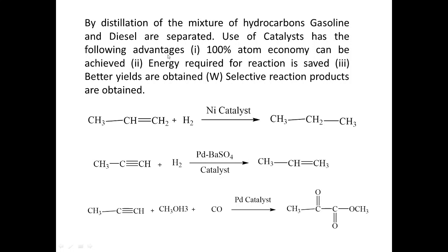Use of catalyst has the following advantages: 100% atom economy can be achieved; energy required for the reaction is saved; better yields are obtained; selective reaction products are obtained with minimum byproducts; and maximum product is obtained. These are the key advantages when a catalyst is used.